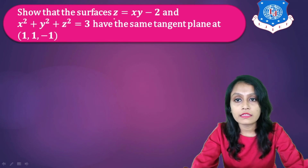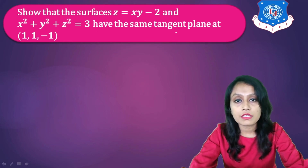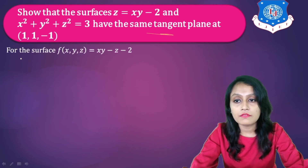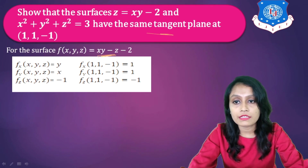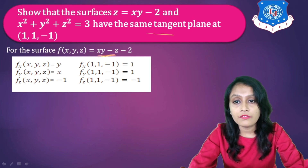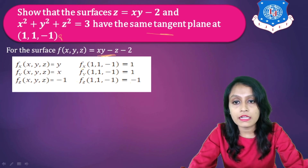Next example: show that the surfaces z = xy − 2 and x² + y² + z² = 3 have the same tangent plane at point (1, 1, −1). For the first surface, F(x, y, z) = xy − z − 2. Finding partial derivatives: Fx = y, Fy = x, Fz = −1. At point (1, 1, −1): Fx = 1, Fy = 1, Fz = −1.